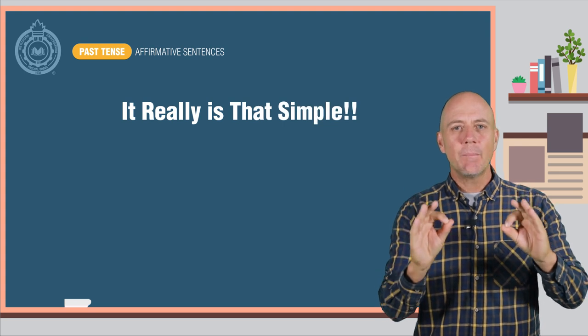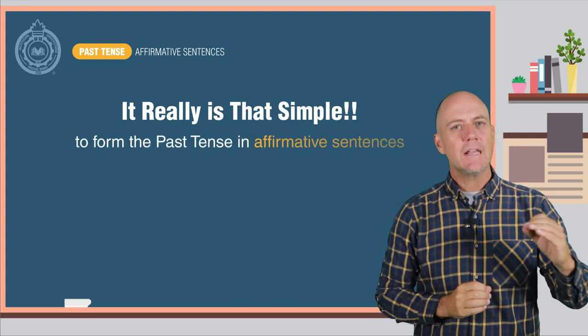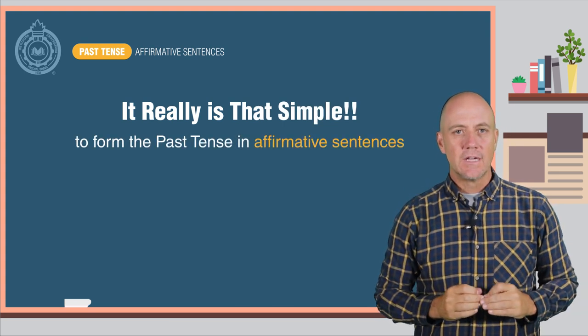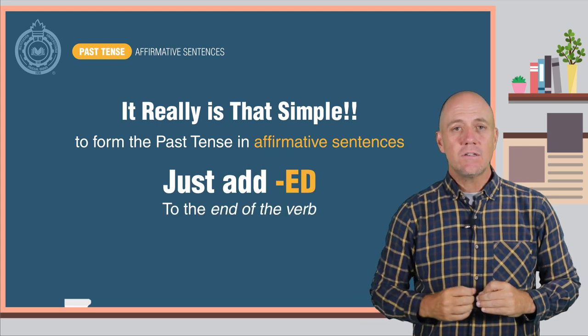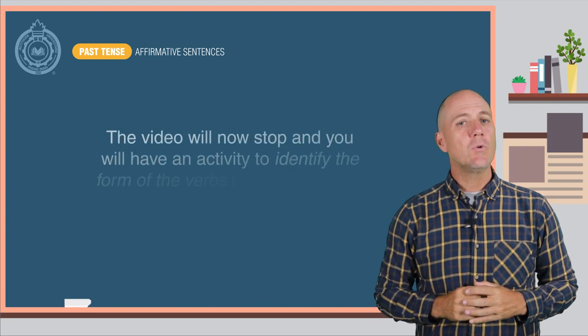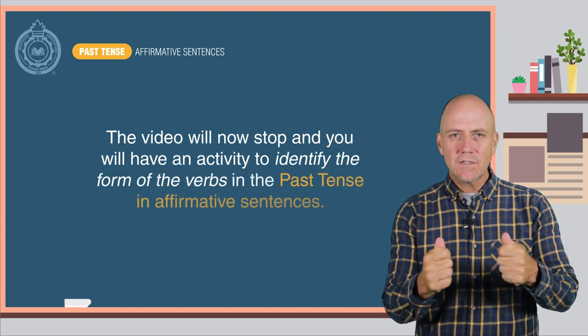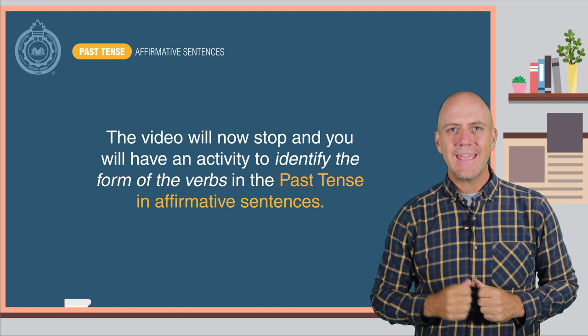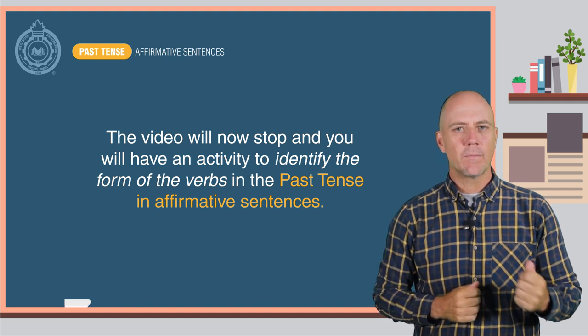It really is that simple to form the past tense in affirmative sentences in English. Just add "-ed" to the end of the verb. Nothing more. The video will now stop and you will have an activity to identify the forms of the verb in the past tense in affirmative sentences.